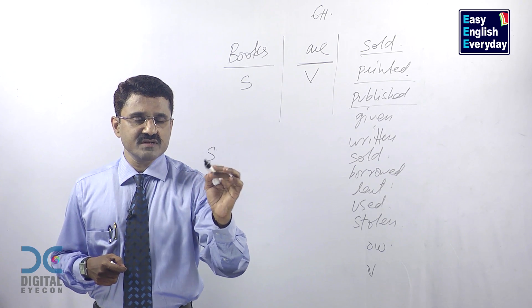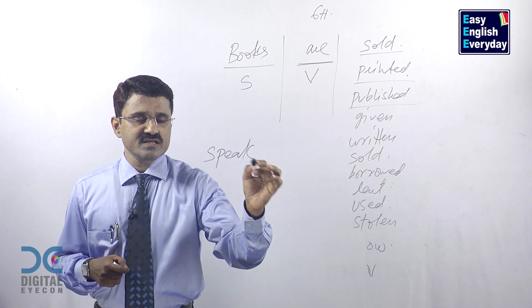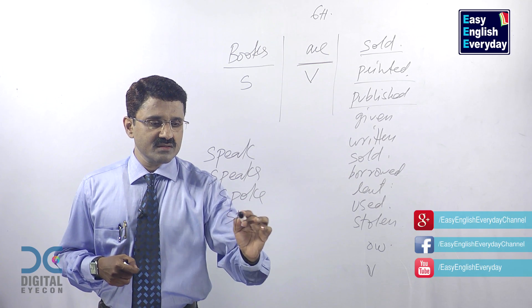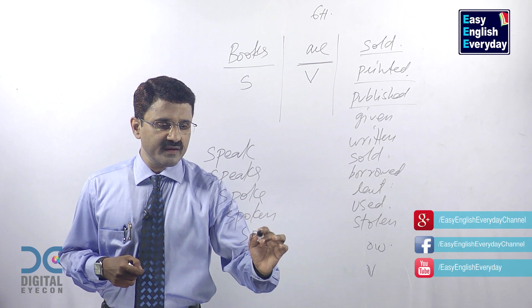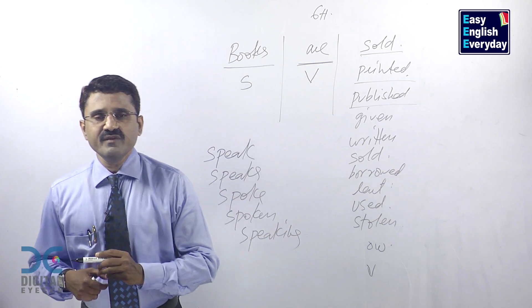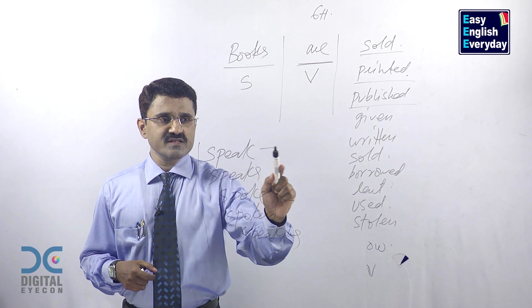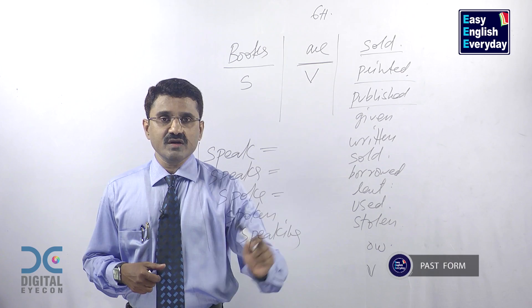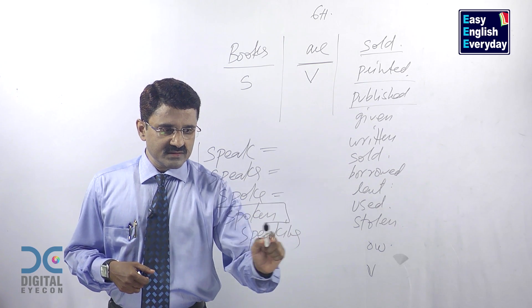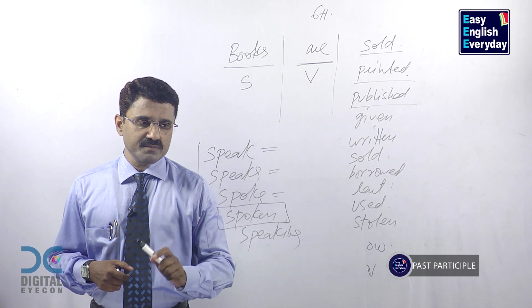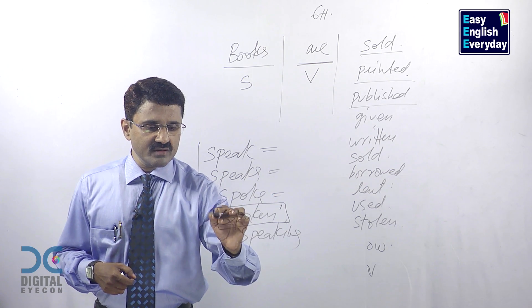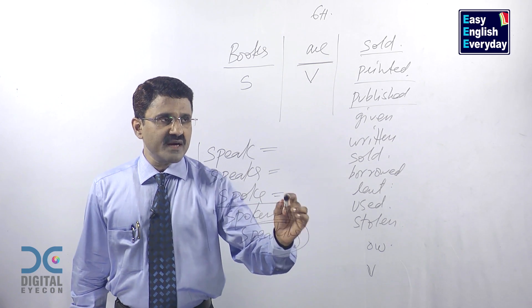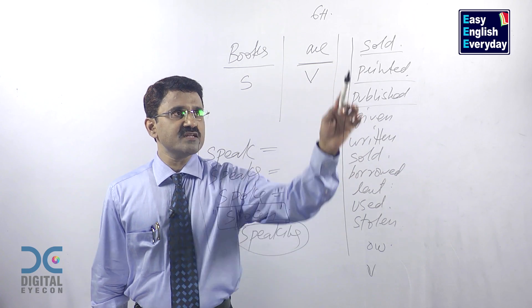They are called action verbs and they are in past participle form. Every action verb has five forms. Let's take a look: speak, speaks, spoke, spoken, and speaking. This is called base form. This is called S form. This is called past form. This is called past participle form. And this is called ing form.